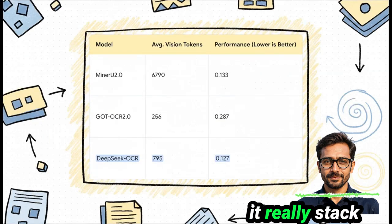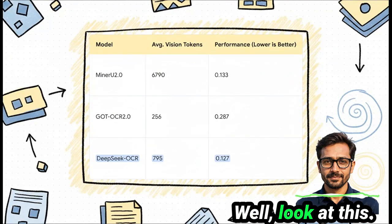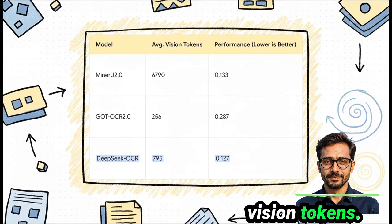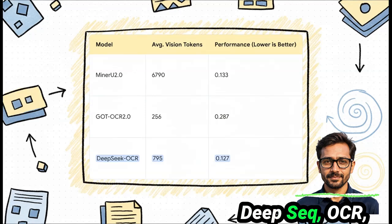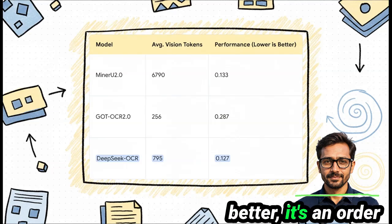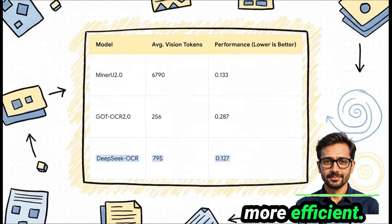So how does it really stack up against the big players? Well, look at this. A top model like Minora 2.0 needs almost 7,000 vision tokens to process a page. DeepSeek OCR, it gets a better performance score using fewer than 800. It's not just a little better, it's an order of magnitude more efficient.